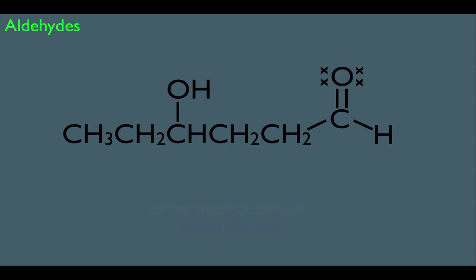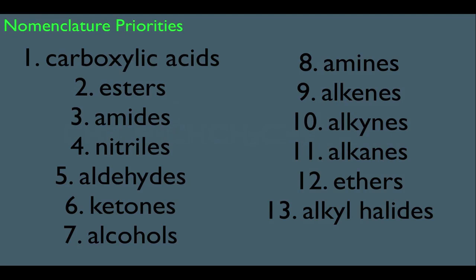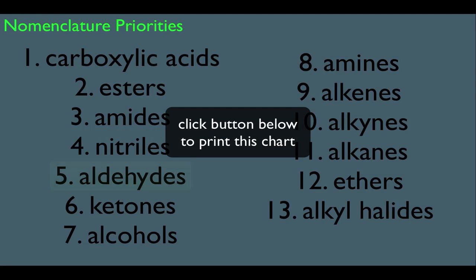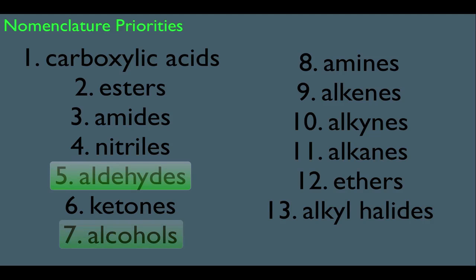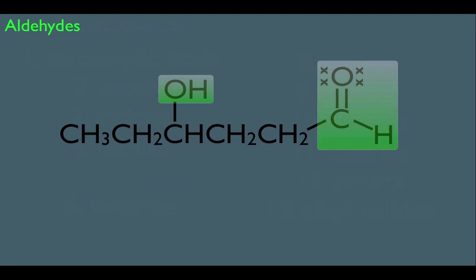Let's look at this next example. Notice this molecule has an aldehyde and also an OH group. Before naming it, we need to know which functional group takes priority. Looking at our official nomenclature priority list, aldehydes are at number 5 and alcohols are at number 7, so the aldehyde takes priority. Going back to the molecule, since the aldehyde has priority and it's six carbons long, the parent name is hexanal. The OH is on the 4th carbon, so we say 4-hydroxy. Therefore, this molecule is 4-hydroxyhexanal.